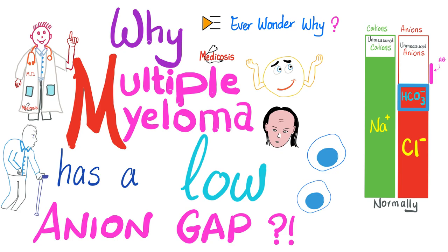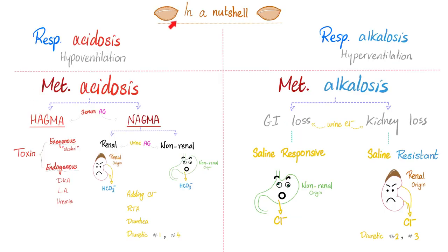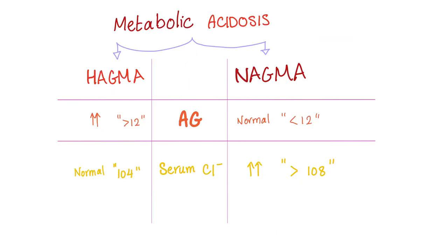The anion gap is the difference between the unmeasured anions and the unmeasured cations. It also happens to equal the measured cations minus the measured anions. We have four types of acid-base disorders: respiratory acidosis, respiratory alkalosis, metabolic acidosis, and metabolic alkalosis. Metabolic acidosis is divided into high anion gap metabolic acidosis and normal anion gap metabolic acidosis, based on the serum anion gap. HAGMA has a high anion gap but a normal serum chloride, whereas NAGMA has a normal anion gap but an elevated serum chloride — HAGMA is normochloremic while NAGMA is hyperchloremic.